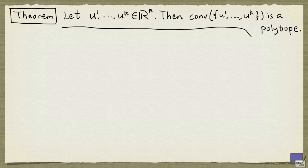So we are going to prove this result here. If u^1 up to u^k are elements in R^n, then the convex hull of u^1 up to u^k is a polytope.